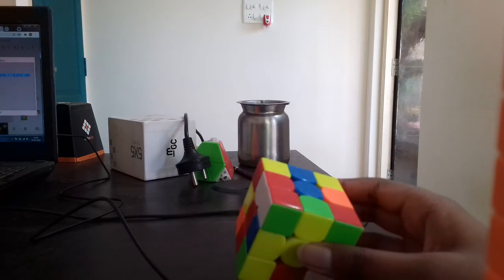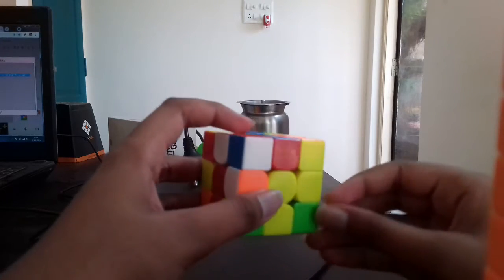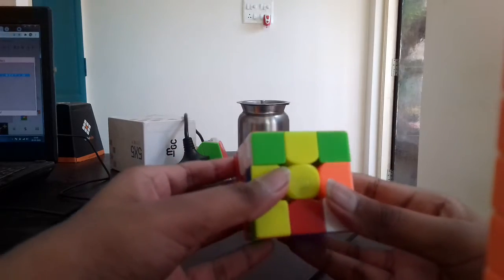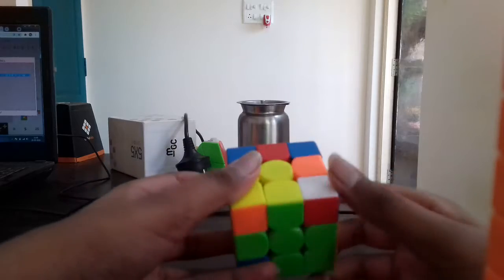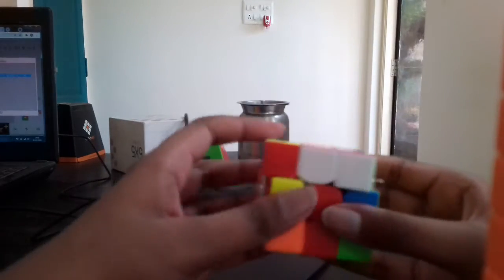Here most people will just do F2, but if we actually do F2 that will break up this F2L pair. So what I did was M' U2 M. That inserts the edge and I preserved the F2L pair. Then rotate and insert this pair.